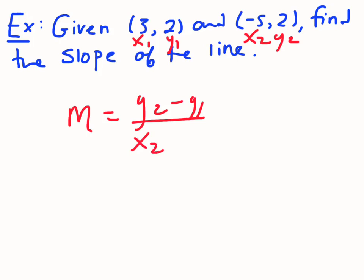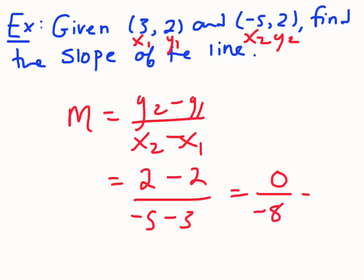So we have m equals y2 subtract y1, all over x2 subtract x1. And that's going to be y2 is 2, y1 is 2, divided by x2 is negative 5, subtract 3. So I end up with 0 over negative 8, which of course is still just 0.